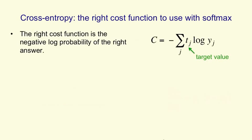Now the question is: if we're using a softmax group for the outputs, what's the right cost function? The answer, as usual, is that the most appropriate cost function is the negative log probability of the correct answer — that is, we want to maximize the log probability of getting the answer right. So if one of the target values is a 1 and the remaining ones are 0, then we simply sum over all possible answers, putting zeros in front of all the wrong answers and 1 in front of the right answer, and that gives us the negative log probability of the correct answer, as you can see in the equation. That's called the cross-entropy cost function.